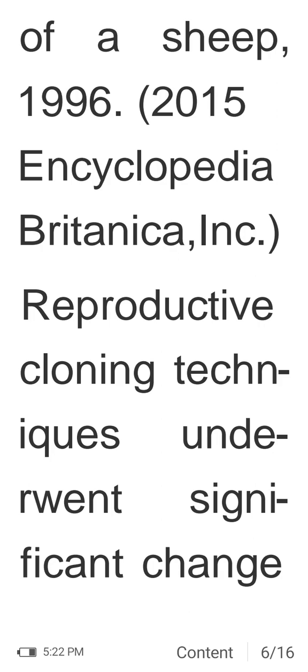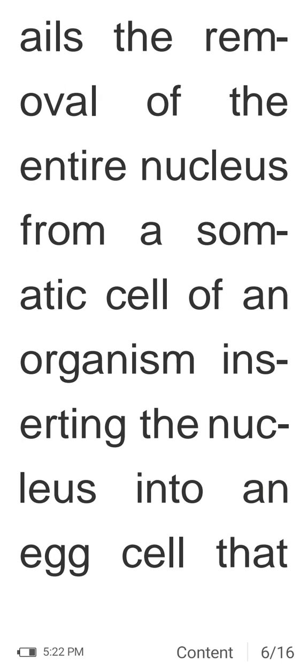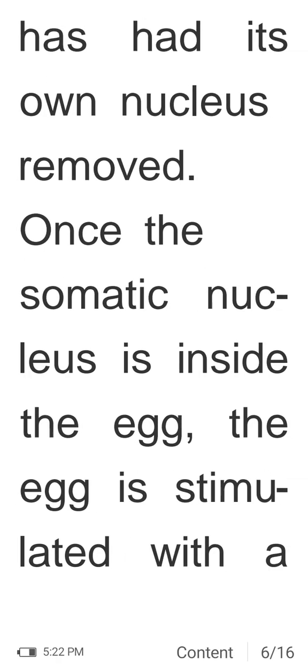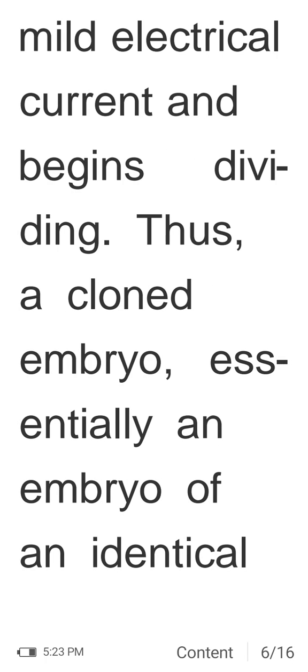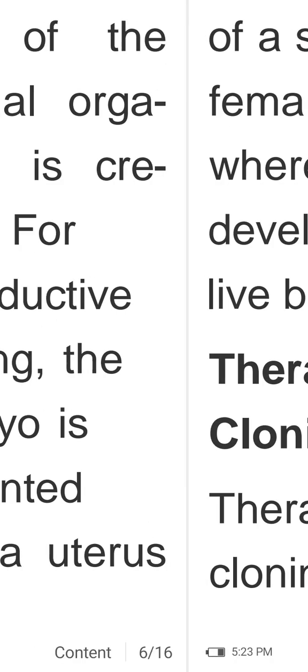The SCNT process entails the removal of the entire nucleus from a somatic cell of an organism and inserting that nucleus into an egg cell that has had its own nucleus removed. Once the somatic nucleus is inside the egg, the egg is stimulated with a mild electrical current and begins dividing, creating a cloned embryo — essentially an identical twin of the original organism.